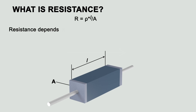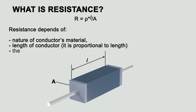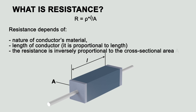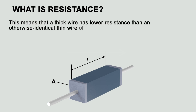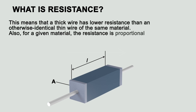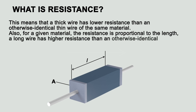Resistance depends on the nature of the conductor's material and the length of the conductor — it is proportional to length. The resistance is inversely proportional to the cross-sectional area A. This means that a thick wire has lower resistance than an otherwise identical thin wire of the same material. Also, for a given material, a long wire has higher resistance than an otherwise identical short wire.